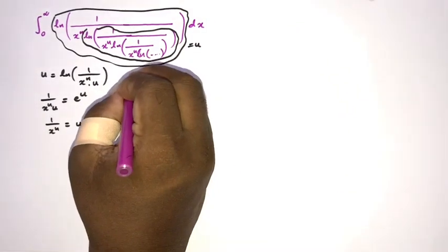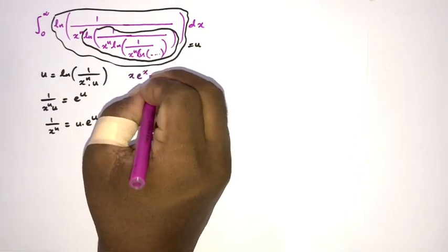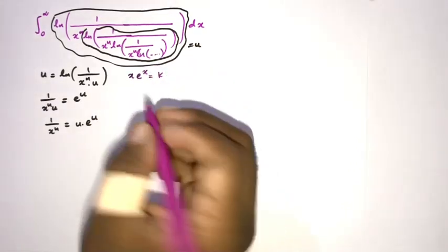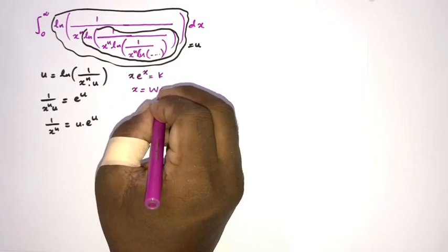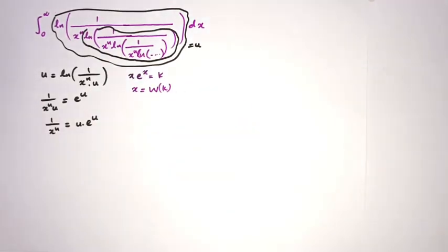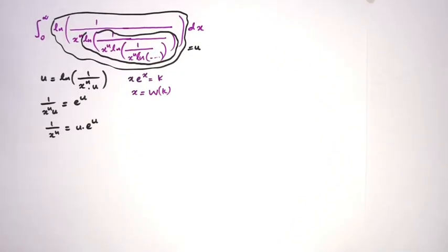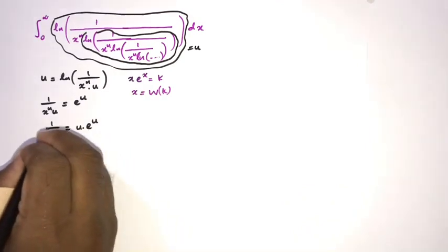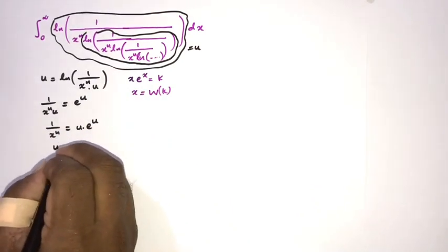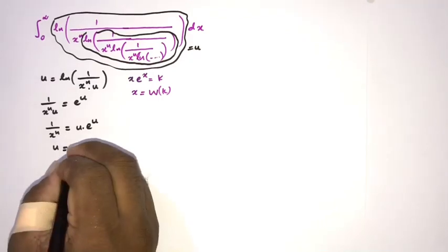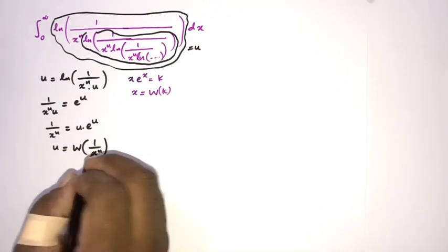We know that if x times e to the x equals k, then x is equal to the Lambert W function of k. So we can use the Lambert W function here. This equation is similar in form, therefore u is equal to the Lambert W function of 1 over x to the n.